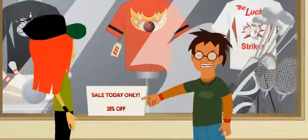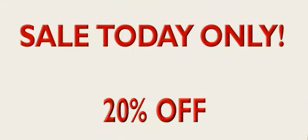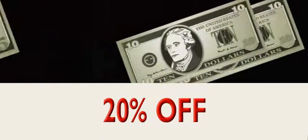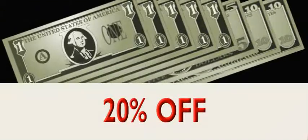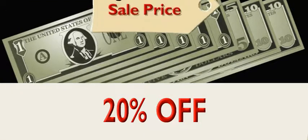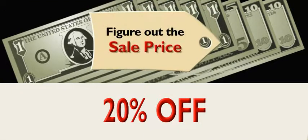Hey, there's a sale today — 20% off. That's awesome, but I've only got $30. I wonder if that's enough to buy the shirt even with the sale. Why don't you just figure out the sale price? I'm not really sure how to do percent stuff.